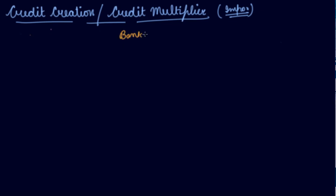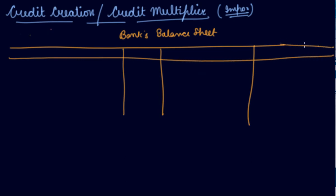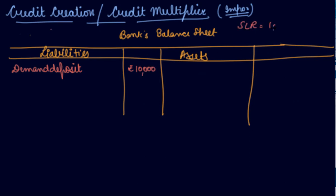We can also see this with the help of a bank balance sheet. The loans the bank gives are assets for the bank because the bank will get the amount back — it is an outstanding asset. The deposits are liabilities. Let's say a person comes and deposits rupees 10,000. Your SLR is 10%, meaning you have to keep 10% as cash, so you keep rupees 1,000 as a reserve.